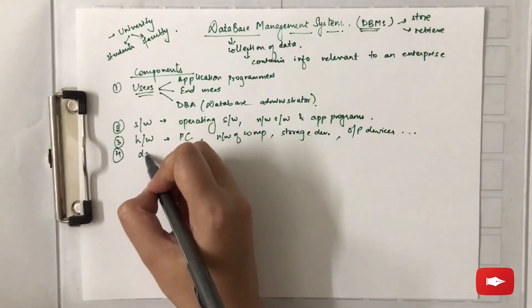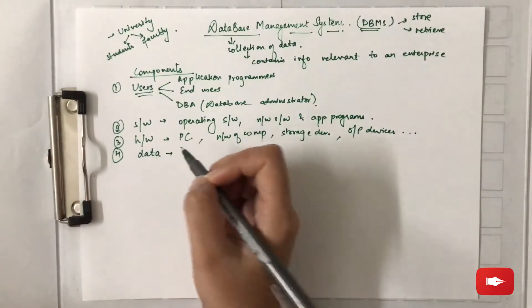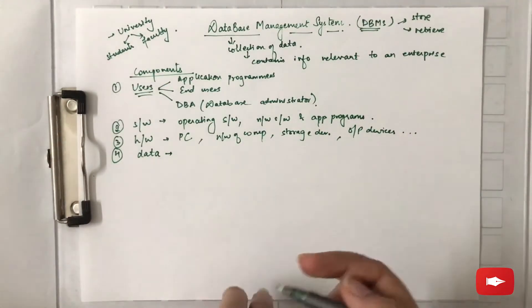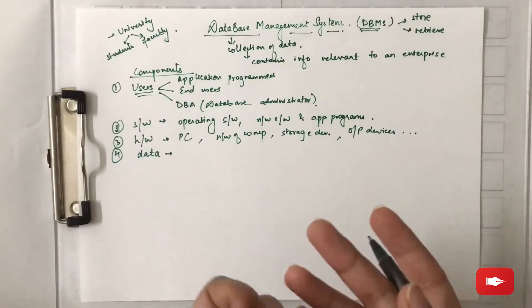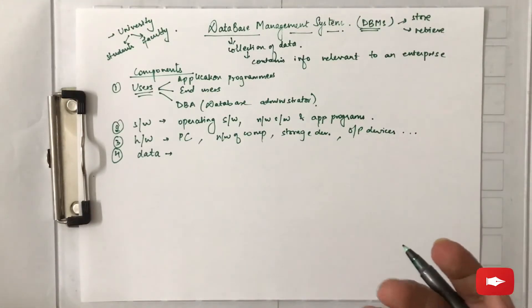The fourth component is the data. Data that has to be stored in the database, which can be numbers, characters, pictures, images, anything. So the four components are user, software, hardware, and data.